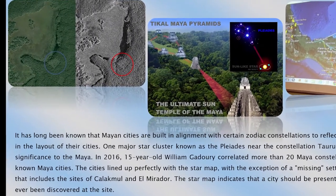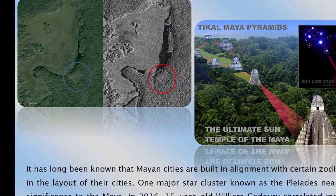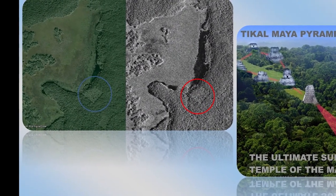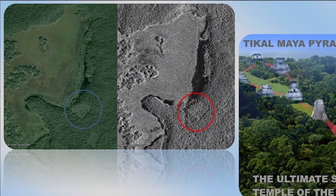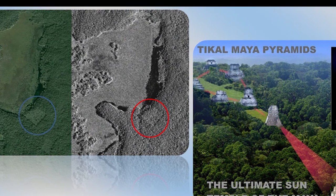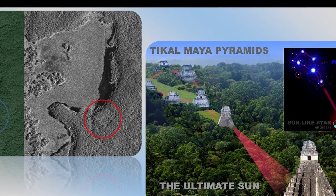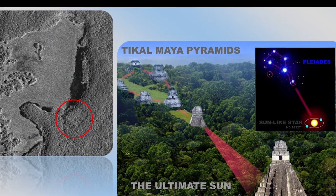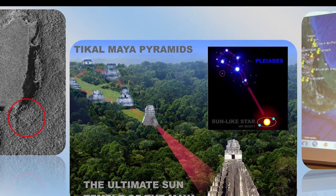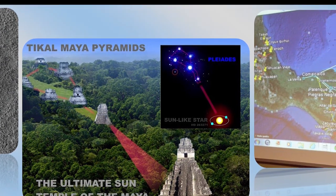One major star cluster known as the Pleiades, near the constellation Taurus, seemed to be of major significance to the Maya. In 2016, 15-year-old William Gaudery correlated more than 20 Maya constellations against a map of known Maya cities. The cities lined up perfectly with the star map, with the exception of a missing settlement in a constellation that includes the sites of Calakmul and El Mirador. Gaudery pinpointed the location of the potential site in Campeche, Mexico, by using its corresponding star.